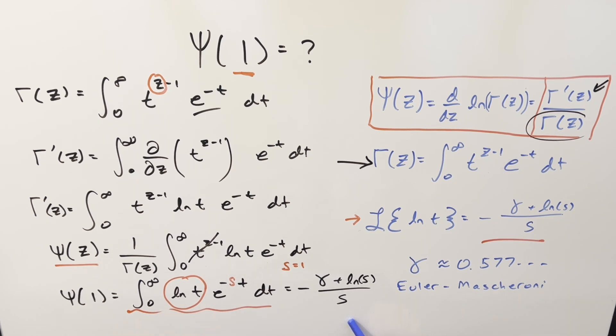But anyway, getting back to finishing this off, we're really close now because here we have our digamma of one written this way, but we already know what S is. We just said it was one. So all we need to do is plug one in here and here.